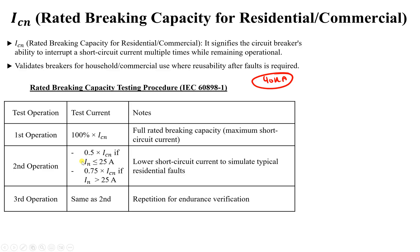The third test repeats the same operation as the first. So the full procedure is: 100% of the fault, then a reduced fault level, then repeat — three interruptions in total. This confirms the breaker under IEC 60898-1 can handle repeated faults and remain operational.